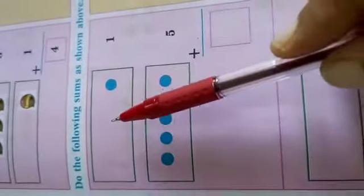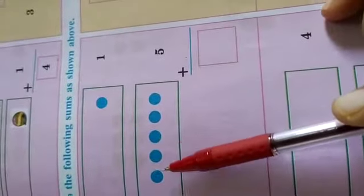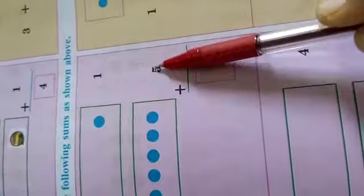Now here 1 dot. Here how many dots are there? 1, 2, 3, 4, 5. 5 dots are there. 5, 1.